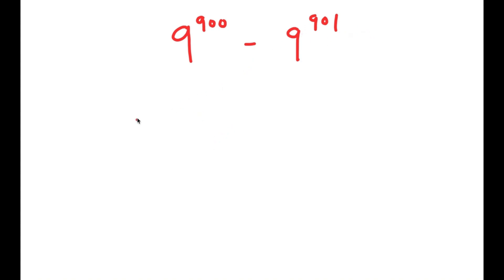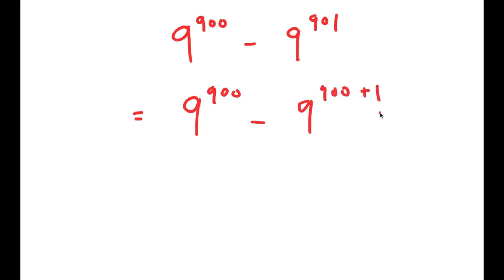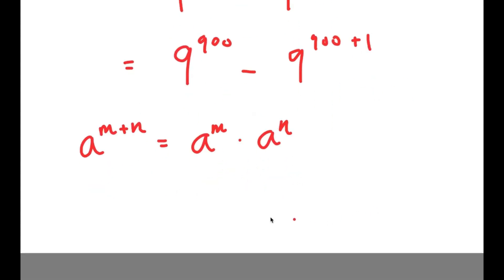We can use properties of exponents to do this. So I'm actually going to rewrite 9 to the power of 901 as 9 to the power of 900 plus 1. And now I can use the exponential property a to the power of m plus n is equal to a to the power of m times a to the power of n. So I get 9 to the power of 900 minus 9 to the power of 900 times 9 to the power of 1.